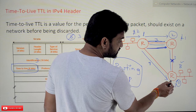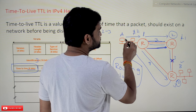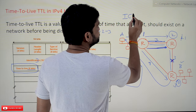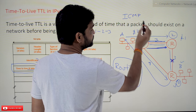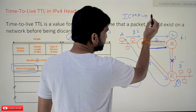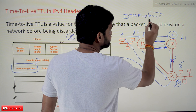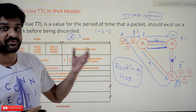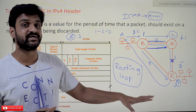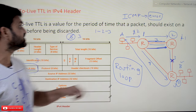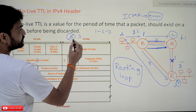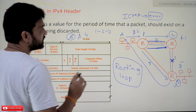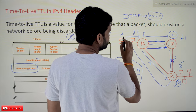When the TTL reaches 0 at a router, the packet is discarded and the router sends an ICMP packet back to the source system. This ICMP error message states that the Time to Live has expired, so the packet cannot be forwarded further. The system then changes the TTL value — it started with 3, so it will now try with 4.